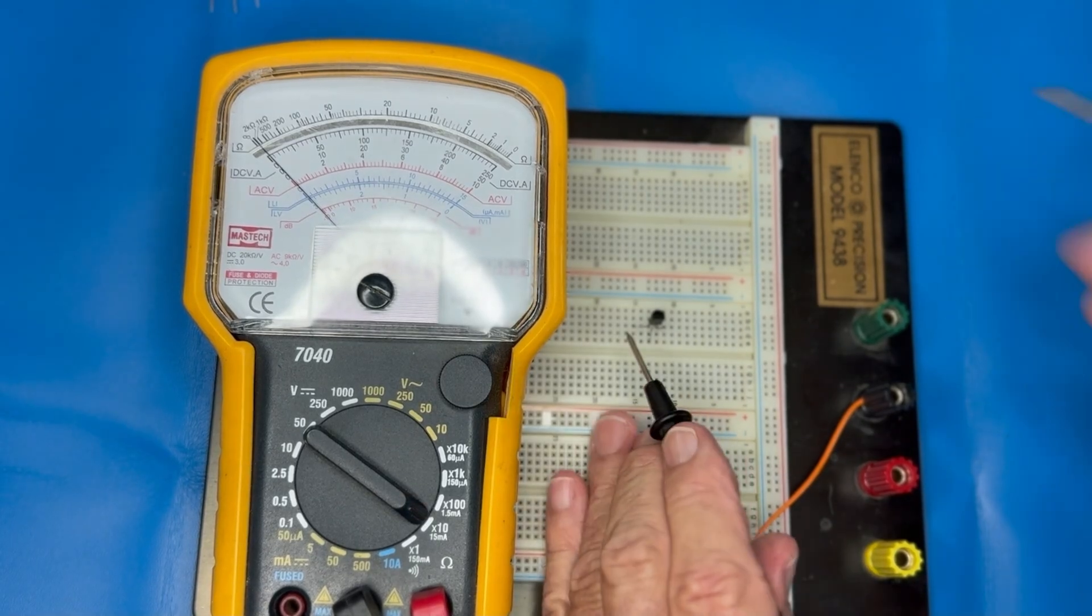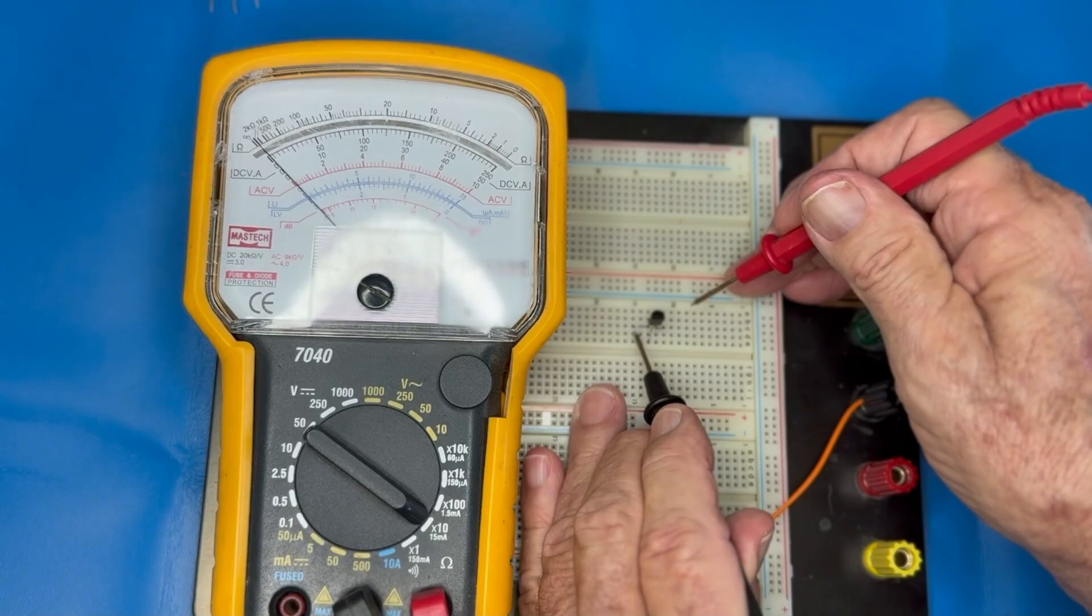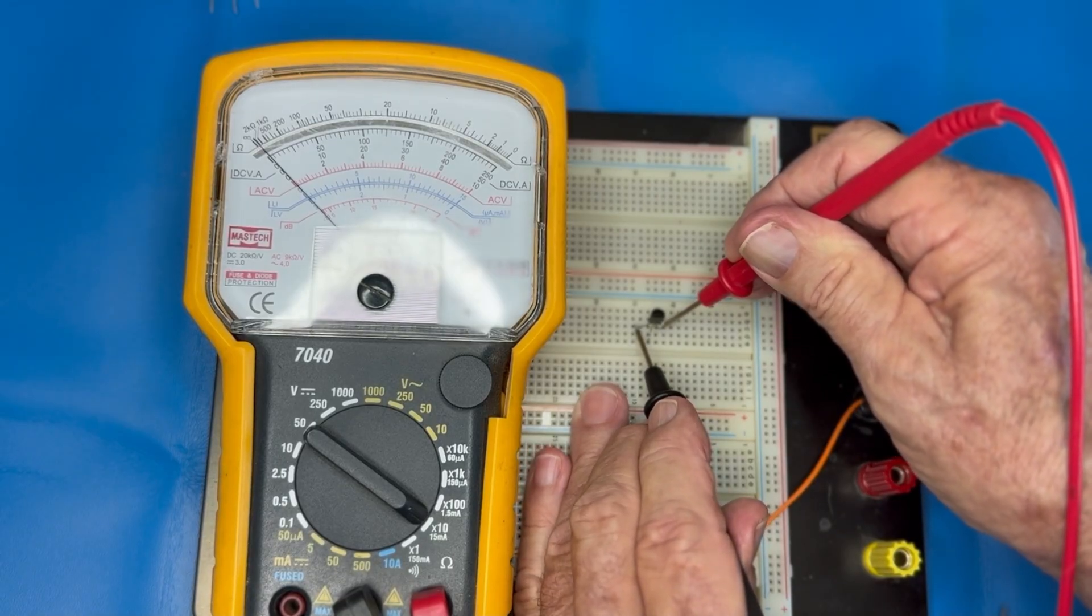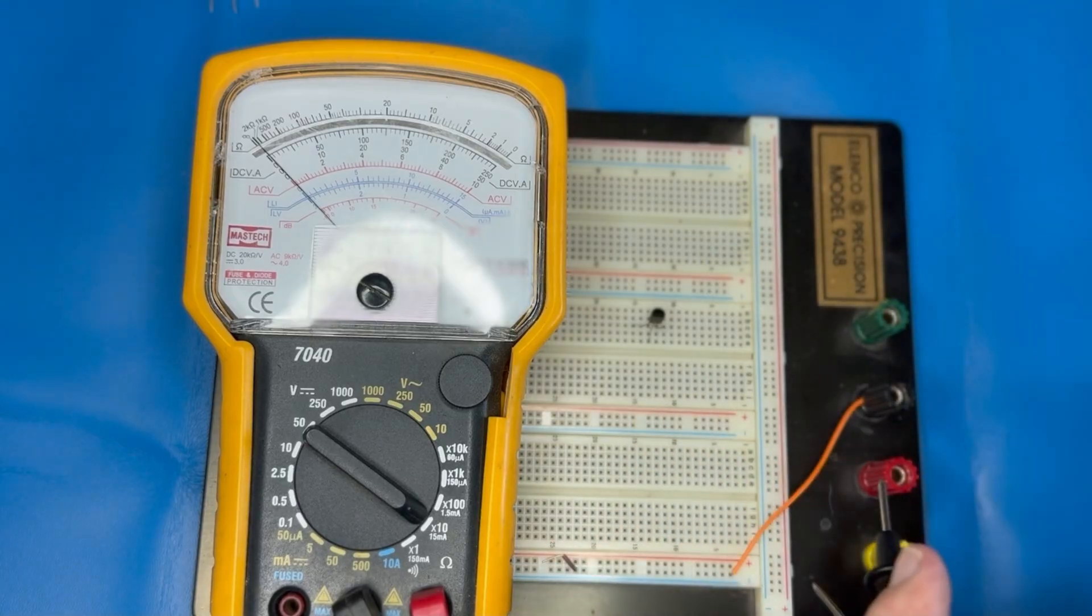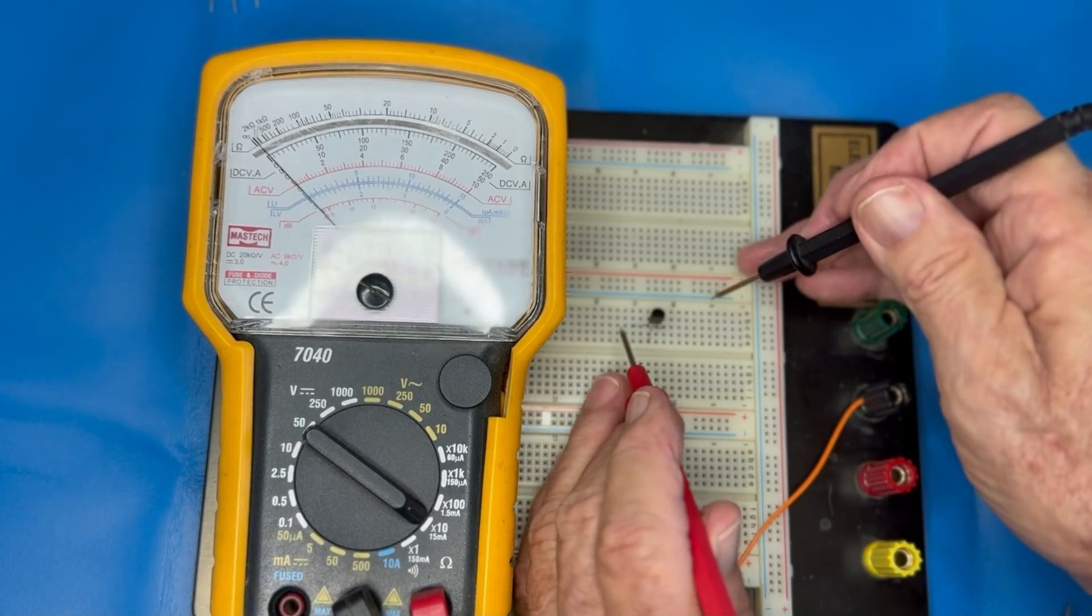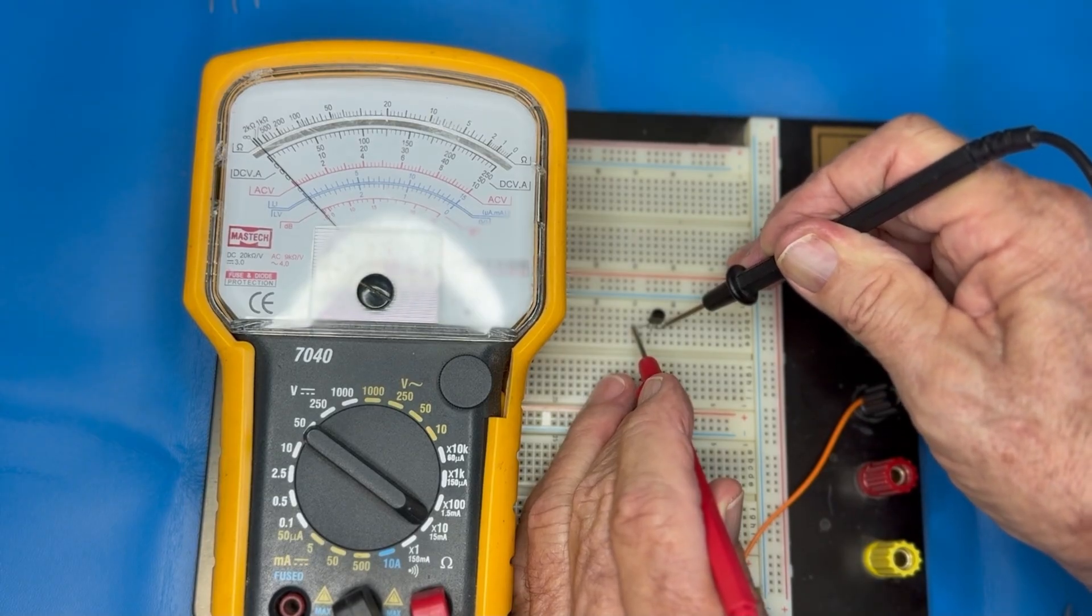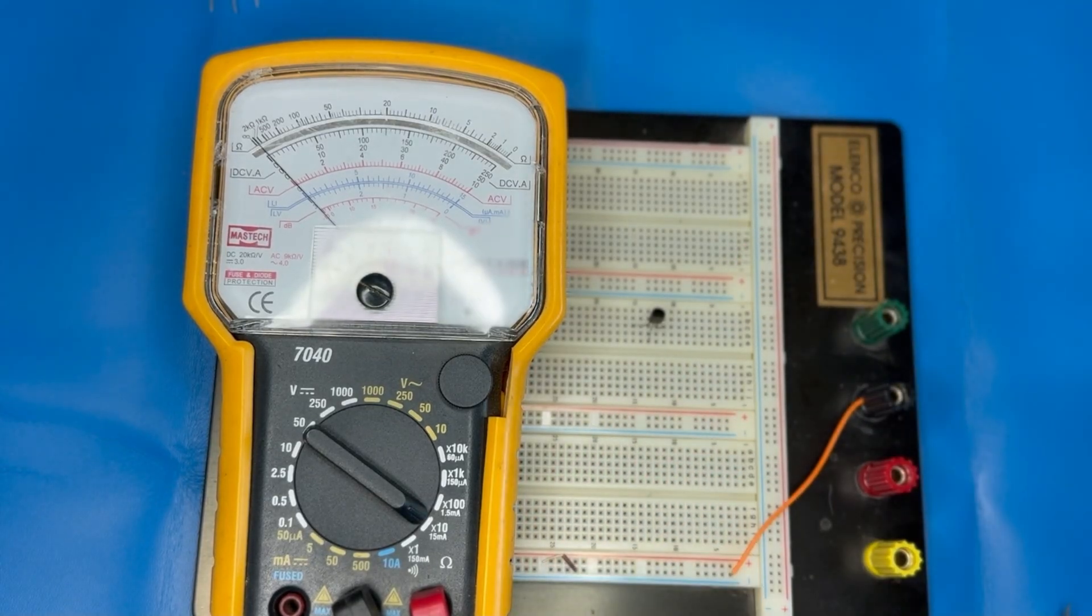Now if I go from emitter to collector, since there's no current on the base, there should be no conduction. As you can see in the meter, there's no conduction. We'll reverse the leads, and as we can see, there's no conduction there either. So we know that this transistor is good.